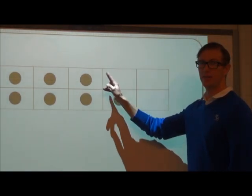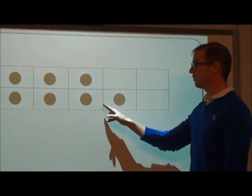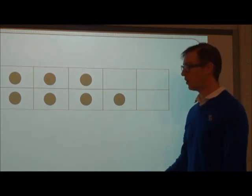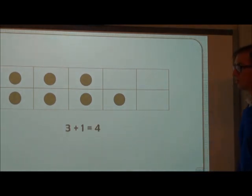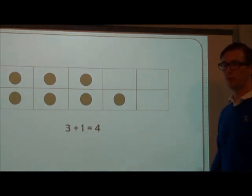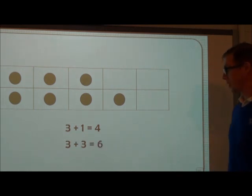Look at this 10 frame. I can see there are 3 dots on the top and 4 dots on the bottom. They are near doubles. The 4 is the same as 3 plus 1. So I can double 3 which is 6 and then add 1 to make 7.